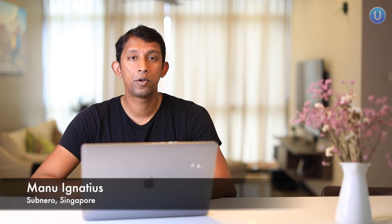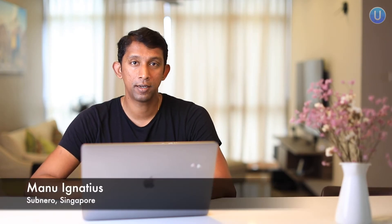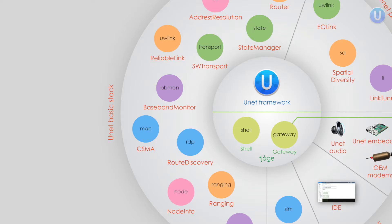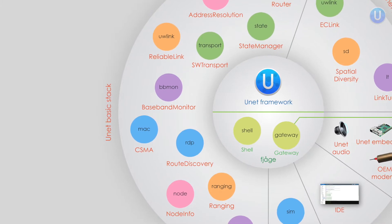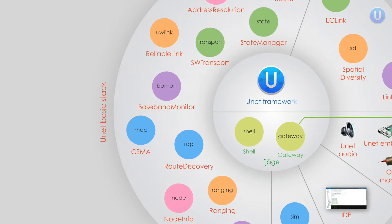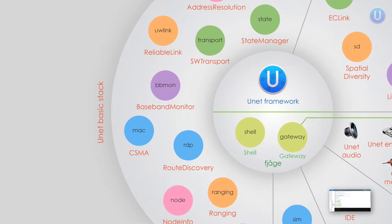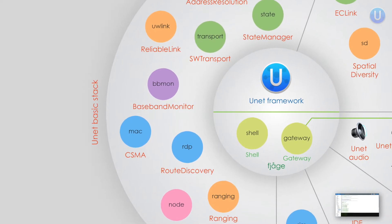Hello there. In this video, we will be talking about basics of UnetStack. UnetStack is an agent-based network stack. An agent in UnetStack is very similar to a layer in a traditional network stack, but they have more flexibility in using some of the scarce resources like energy and bandwidth to optimize an underwater network. In order to develop UnetStack agents, you need to understand some of the core concepts of UnetStack.